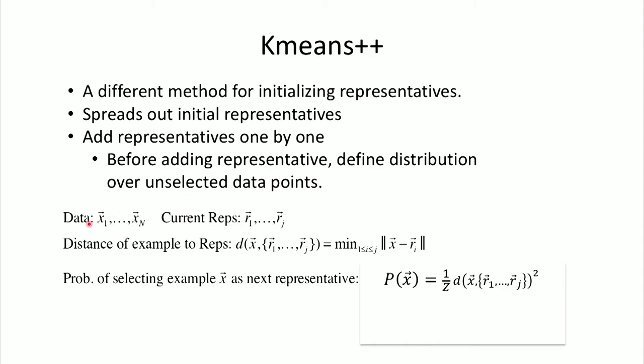So let's say that the data is x1 to xn and we have as current representatives r1 to rj. We define the distance of an example to the representatives to be simply the minimum distance of that example to any one of the representatives. So it's just the minimum distance.